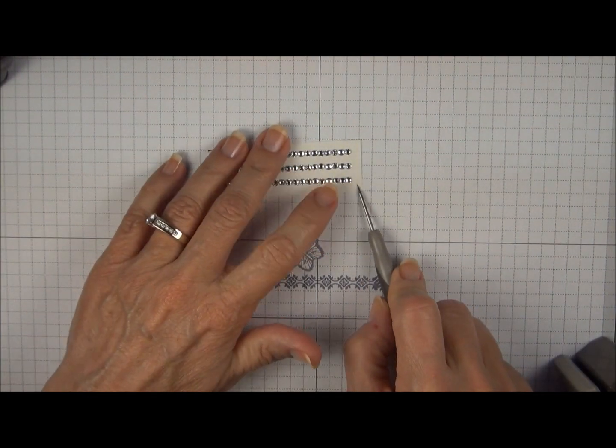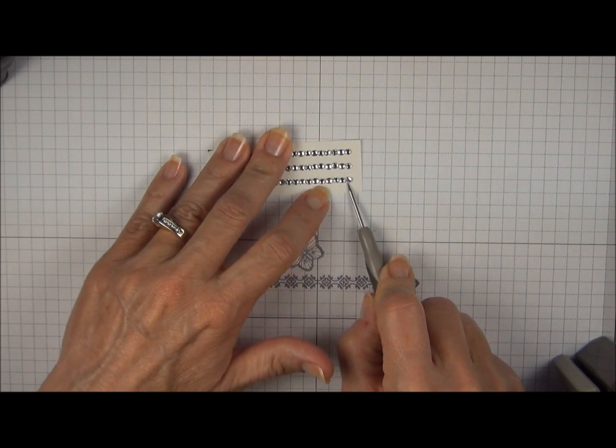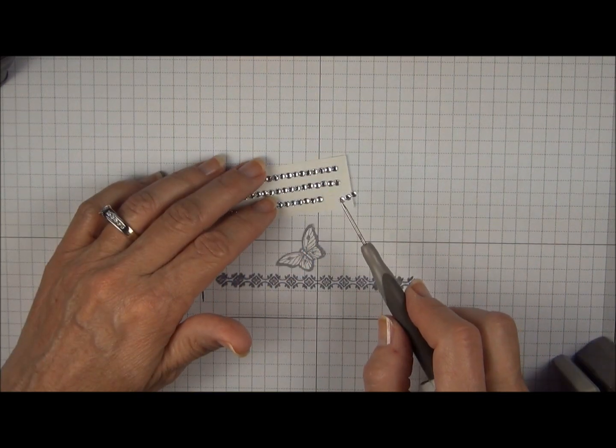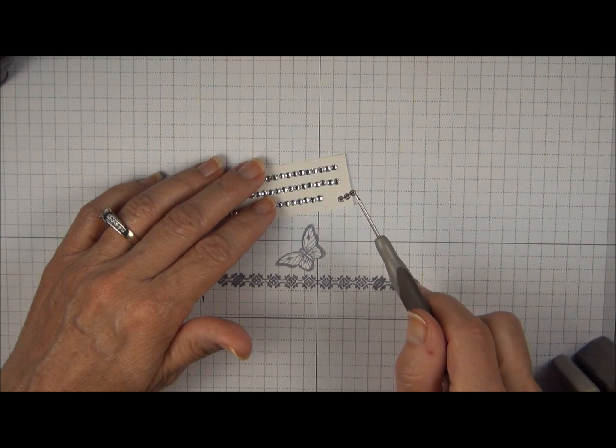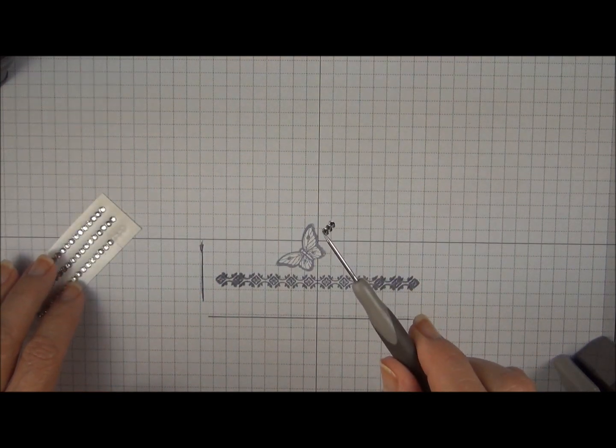I like to use a pokey tool to get under the adhesive so I'm just going to scoot it under just to make sure that the adhesive is still stuck to the back of the rhinestones. You can see how these stayed together.